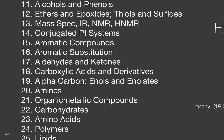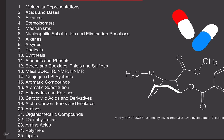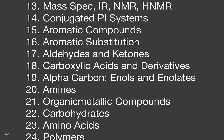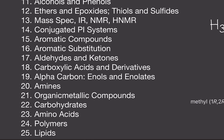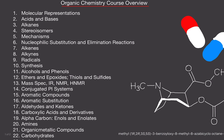Then you've got conjugated pi systems, then aromatic compounds — there's a benzene ring right there. Then aromatic substitution. Aldehydes and ketones. Carboxylic acids and derivatives. Alpha carbon chemistry, enols and enolates. Amines. Organometallic compounds. And then probably the most fun: carbohydrates, amino acids, polymers, and lipids. That's when you get into the really fun stuff and understand where all of this applies to real life. But we have a long way to get there — it's around chapter 22, so we have 21 chapters to cover before that.